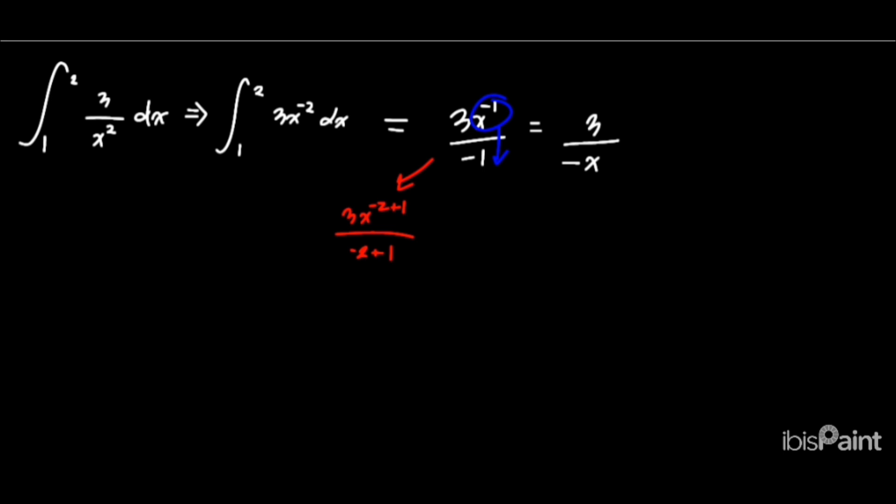Now, we substitute the limits and evaluate F(b) minus F(a). This simplifies to 3/2.